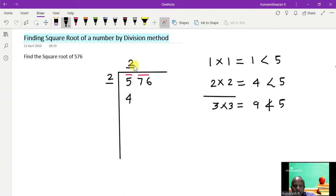Then it becomes 2 into 2 is 4, and then I subtract 4 from 5, which becomes 1. The next step is to bring down the 2 digits in the next bar. So therefore 176 is the new dividend here.